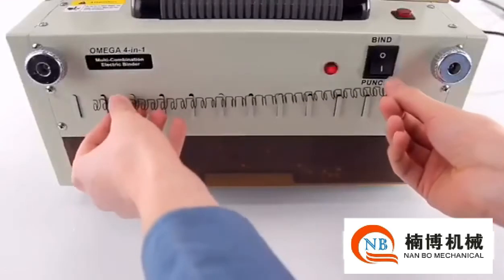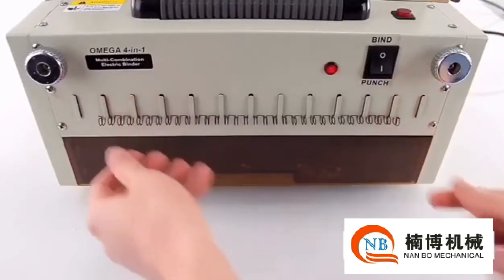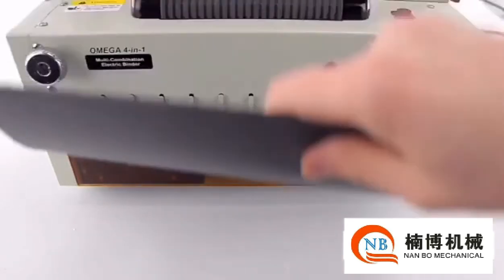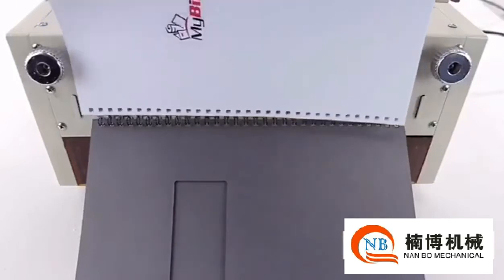For wire binding, insert the correct size wire in the front. Place your covers and pages together face up. Insert the wire through the back cover first. Continue to punch and place all your pages in.